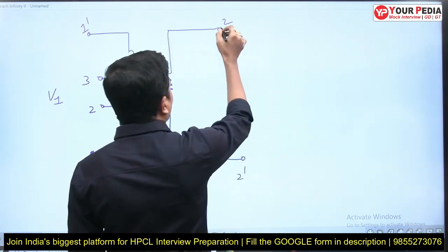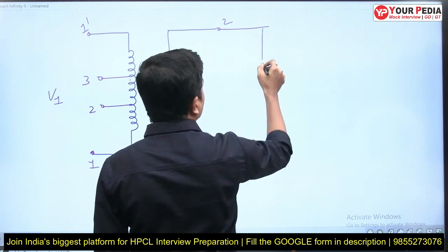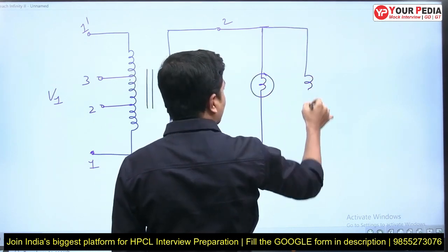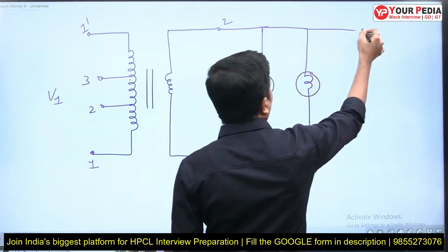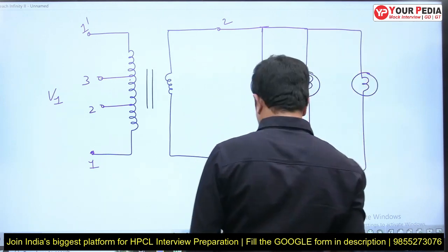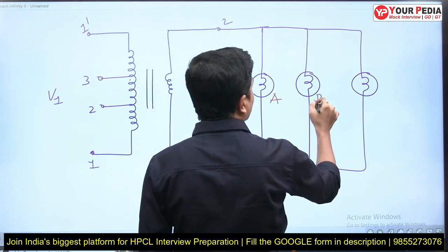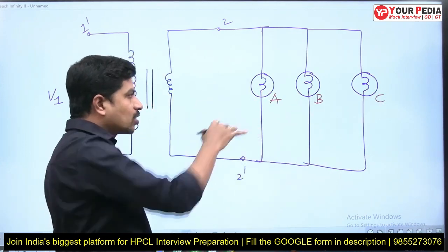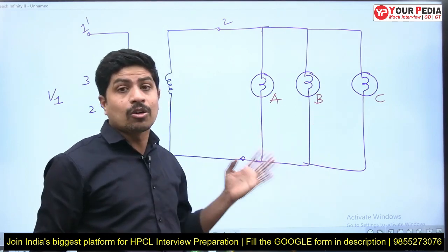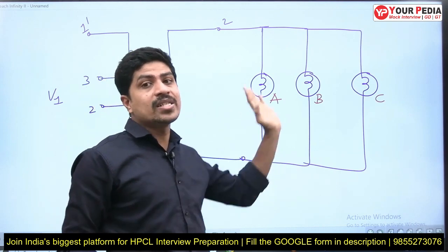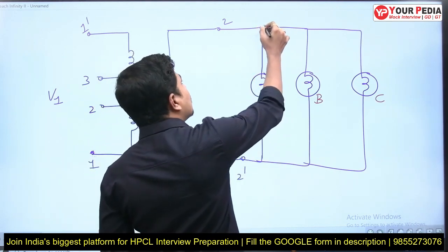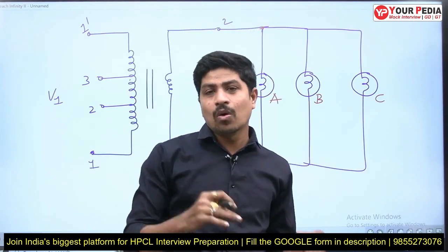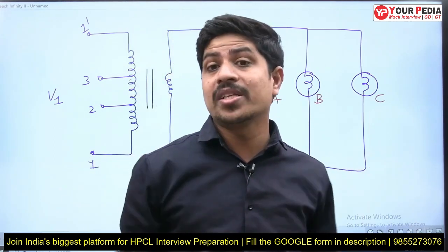On the secondary side there is a load — bulbs A, B, and C. The practical problem is: whenever we connect more loads, secondary current increases, causing a greater voltage drop in the secondary winding. When the drop increases, the voltage across the load decreases. Due to that, the load may not operate satisfactorily — the operation at the load is not fruitful if the voltage is insufficient.